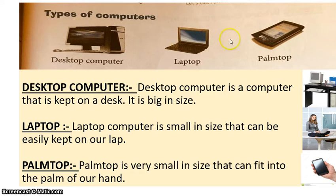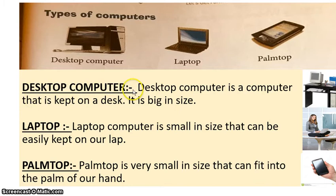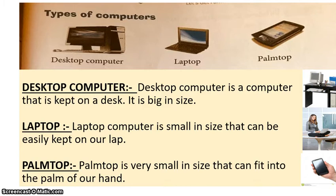There are three types of computers: one is desktop computer, second is laptop, and third is palmtop. A desktop computer is a computer that is kept on a desk. As you can see in the picture, there is a desk with a computer on it. It is big in size.